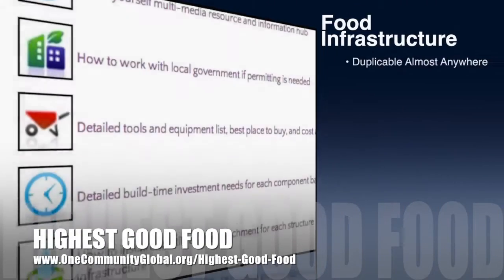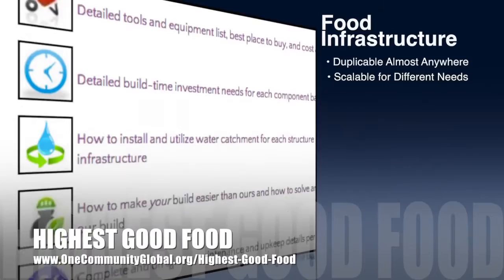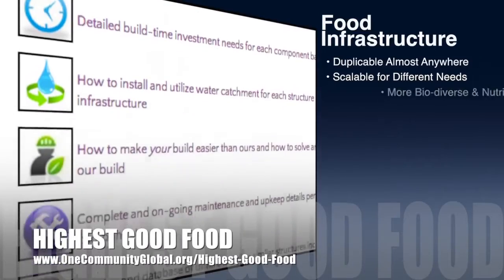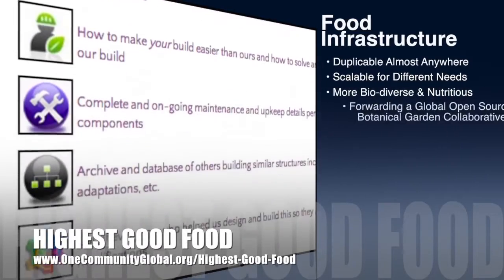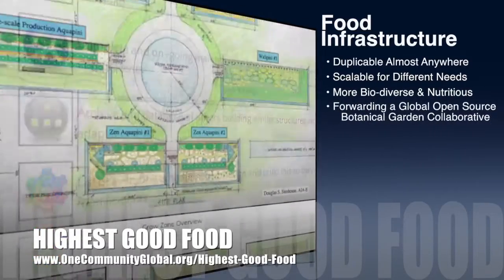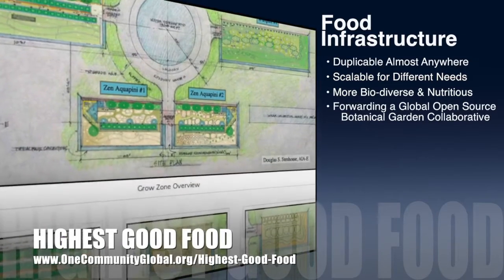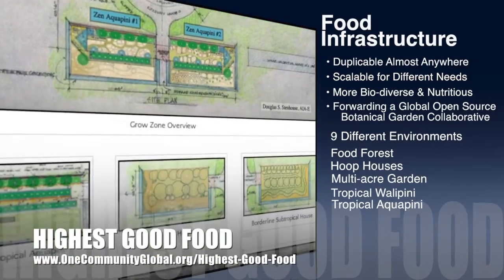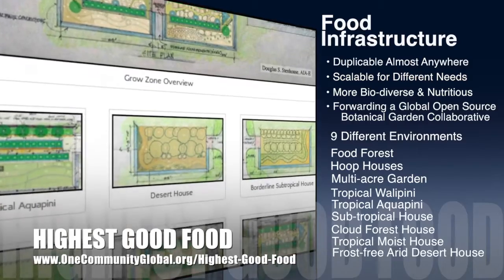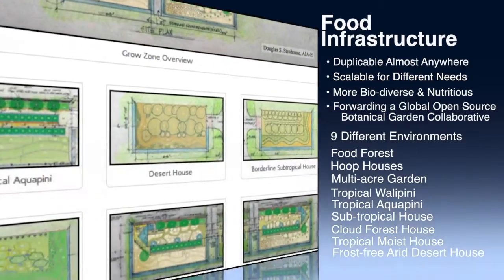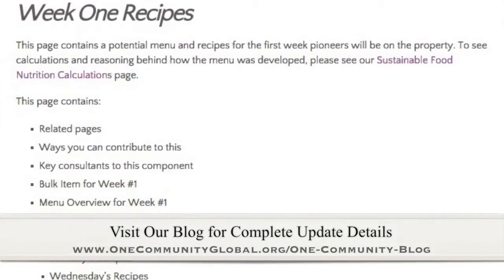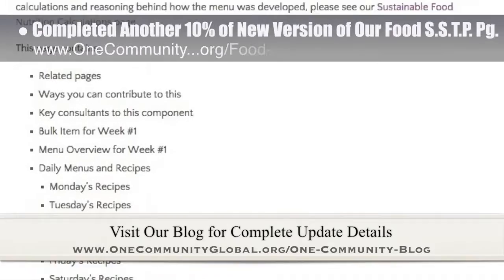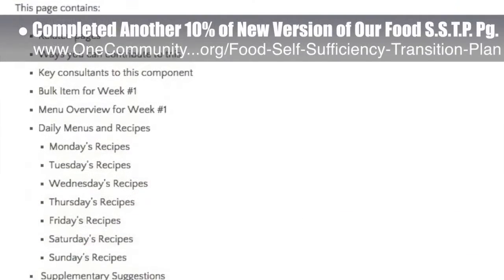One Community's approach to highest good food is duplicable almost anywhere, scalable for different needs, more biodiverse and nutritious, part of forwarding a global open source botanical garden collaborative, and includes nine different free shared and duplicable growing environments. This week the core team working on highest good food completed another 10% of the organization of the streamlined version of our food self-sufficiency transition plan page,